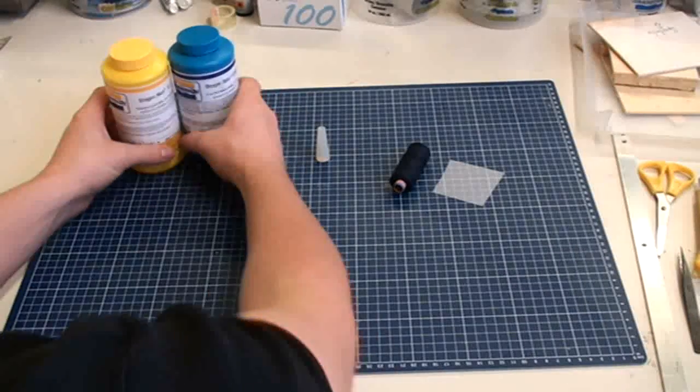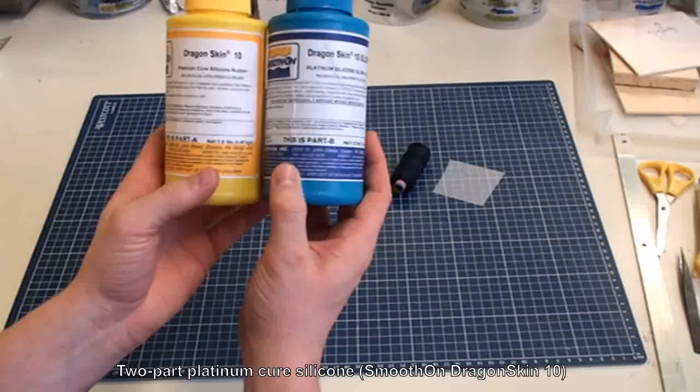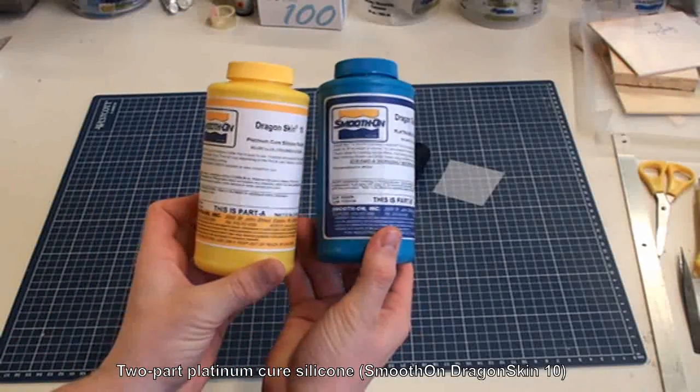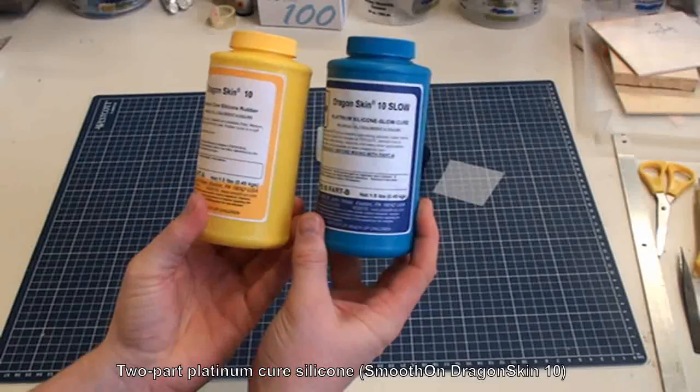The main ingredient is rubber. So here we have a two part silicone rubber of a platinum cure type. We use the Smooth-On brand. It's a very soft and very elastic silicone.